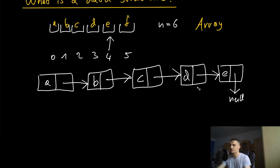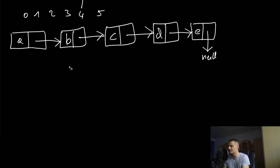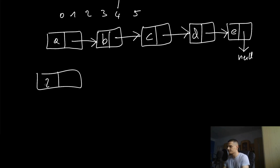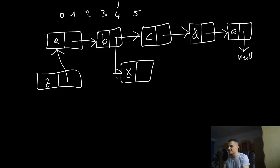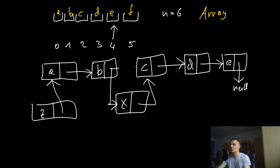This structure allows you to have a dynamic size. To add a new element, you just remove the null pointer and let it point to another node — a, b, c, d, e, and then to null. It's also easy to insert elements in the middle. For example, you can add a z at the front pointing to a, or insert an x between b and c — just let b point to x and x point to c.